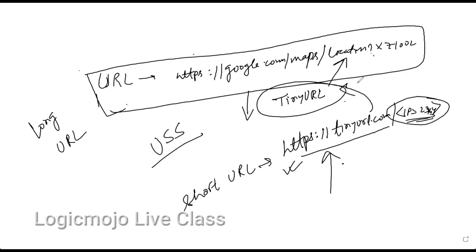You can try it yourself — head over to tinyurl.com or bit.ly or any URL shortener. Take any big URL, put it there, it will give you a short link. Copy that short link, open another tab, put it there, and you will see that it resolves you back to the original URL. That is what it does.